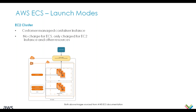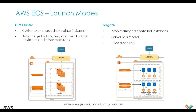ECS has two different launch modes. The first is EC2 cluster, where the customer manages the container instances — the EC2 instances enabled for running containers. There's no charge for the ECS service itself; you're charged only for the EC2 instances. The second is Fargate, the serverless offering, where AWS manages all the infrastructure. You just run the container and pay per task — based on how long the task runs.